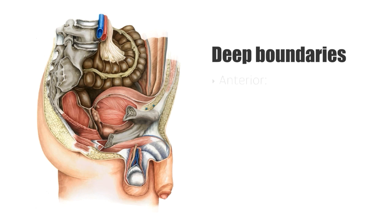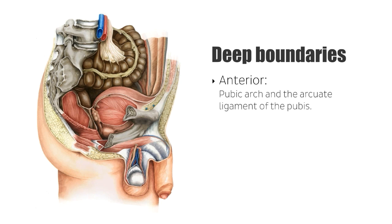Anteriorly, there is the pubic arch and the arcuate ligament of the pubis, which will be defining the anterior boundaries of the perineum.